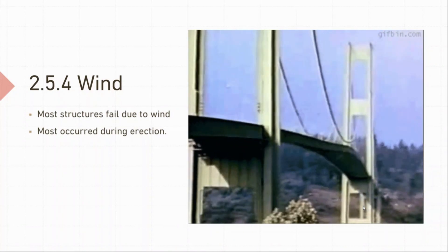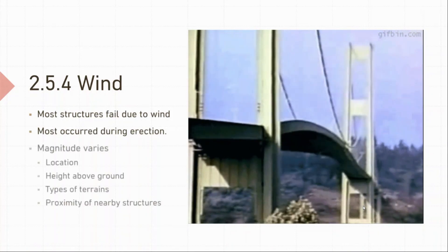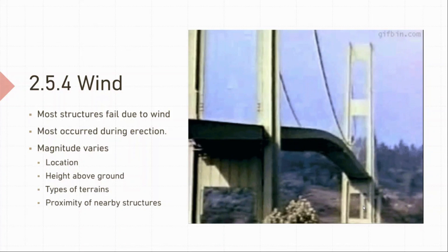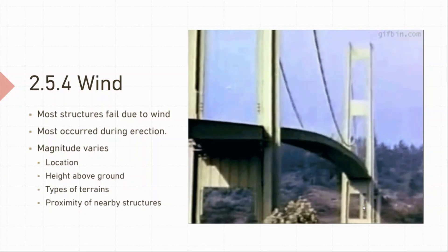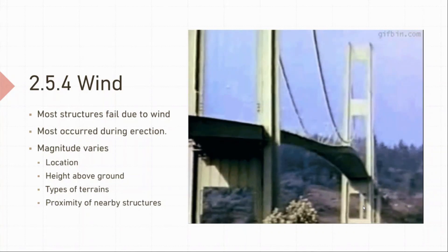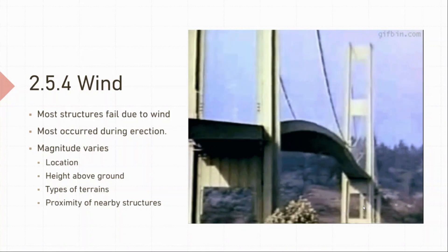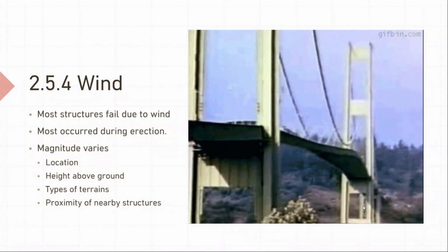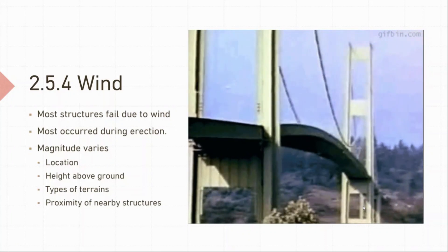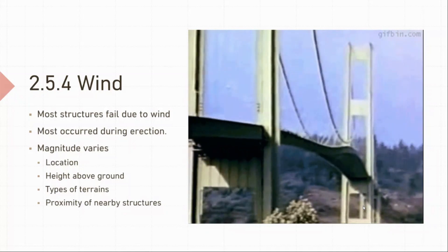Wind loads are not uniform. They depend on a variety of factors, like geographical location. For example, Florida is subjected to extreme winds than probably any other state in the US. Next, we have height above ground. As you might have noticed, it is more windy at the top than at the base level. If you have visited the Empire State Building or any observation deck of a tall structure, you will experience strong gusts of wind at the top. Wind also depends on the type of terrains and proximity of nearby structures also affects the wind.